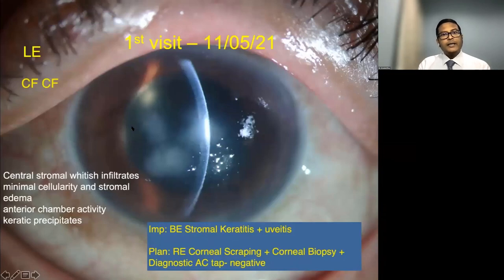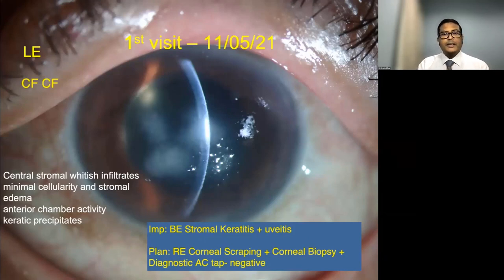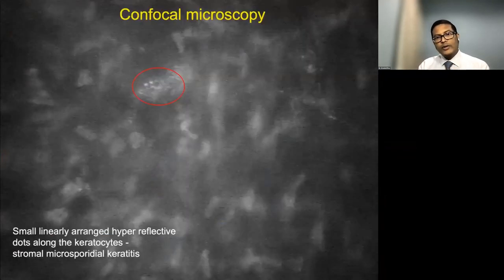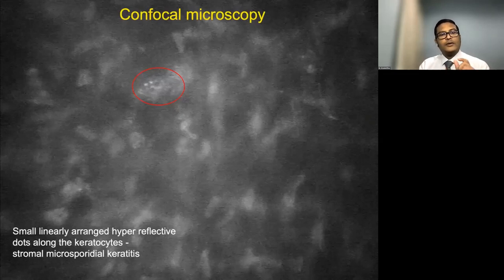The left eye had finger counting vision with central stromal whitish infiltrates, minimal cellularity, stromal edema, anterior chamber activity, and keratic precipitates, giving an impression of bilateral stromal keratitis with uveitis. Scraping was negative. A diagnostic AC tap was also negative. Confocal microscopy showed linear-arranged small hyperreflective dots along the keratocytes, suggestive of stromal microsporidia keratitis.